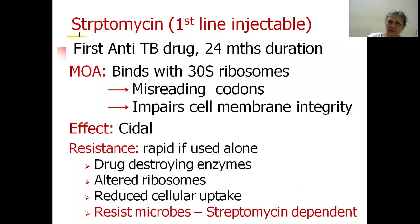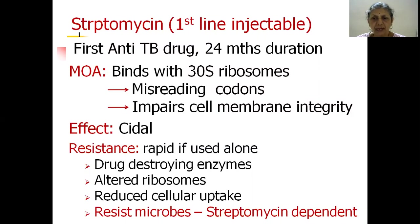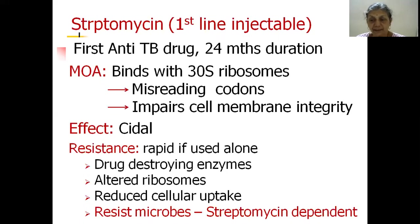Resistance develops rapidly if used alone, by development of drug-destroying enzymes, alteration of the ribosome target molecules, and reduced cellular uptake. An important peculiarity of resistance to streptomycin is that the resistant microbes become dependent on streptomycin — they actually survive with its help. Therefore, as soon as streptomycin resistance is detected, streptomycin must be stopped, otherwise it ends up helping the microbes.